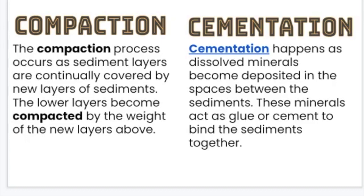A couple of things you should have noticed. We had some compaction — when we pressed down, our layers were not as thick and tall as before; things shrank down a bit. Compaction is a process that occurs as sediment layers are continually covered by new layers of sediment; the lower layers become compacted by the weight above. Cementation happens as dissolved minerals become deposited in the spaces between sediments, acting as glue to bind them together. Look carefully where you added your powdery material — after adding water, it may have cemented your objects and layers together.